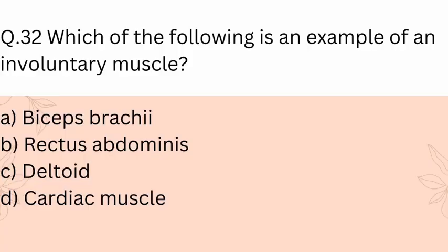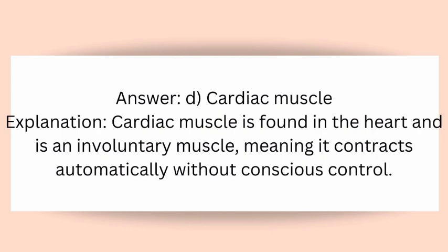Question 32: Which of the following is an example of an involuntary muscle? A) Biceps brachii, B) Rectus abdominis, C) Deltoid, D) Cardiac muscle. Answer: D) Cardiac muscle. Explanation: Cardiac muscle is found in the heart and is an involuntary muscle, meaning it contracts automatically without conscious control.